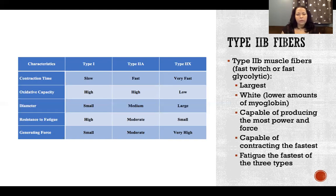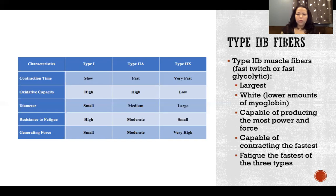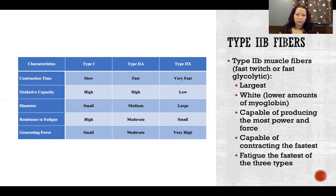Type 2b fibers are referred to as fast twitch or fast glycolytic, referring to their energy system. These are the largest fibers, capable of producing the greatest amount of force and the most power. They're white because they have lower amounts of myoglobin and contract the fastest. However, they also fatigue the fastest because of their energy system — they use less oxygen and are less efficient at producing ATP.